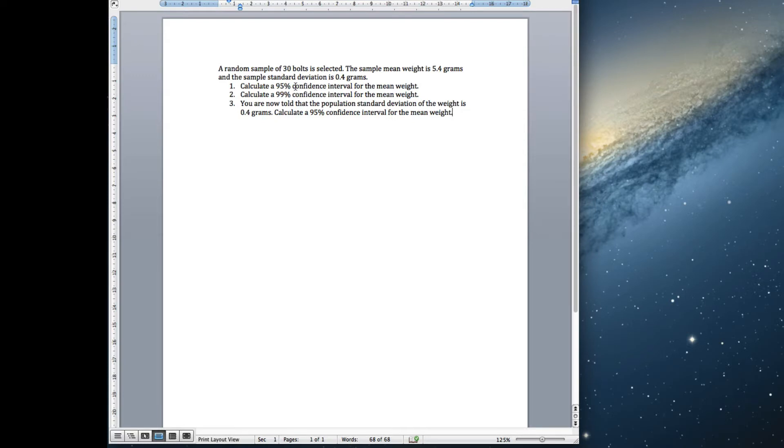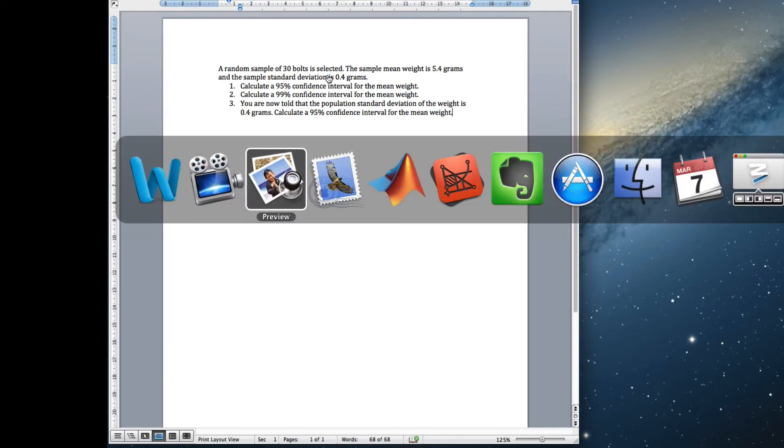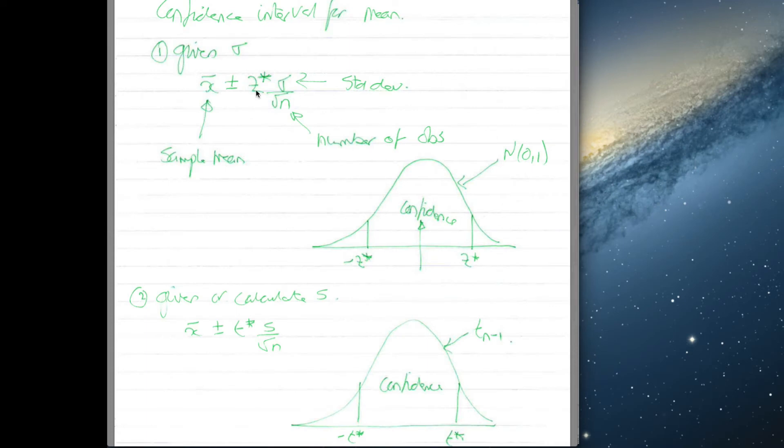So the first thing you want to ask yourself when you look at these problems is, are you given the sample standard deviation, or did you calculate the sample standard deviation, or are you given the population standard deviation? If we look at the cheat sheet, the form is pretty much the same. You take the sample mean plus or minus some cutoff point, and then you put in the standard deviation and divide it by the square root of how many you've observed. The things that change between the two cases: if I'm given the population standard deviation, I use the population standard deviation at this point, and I use a z.